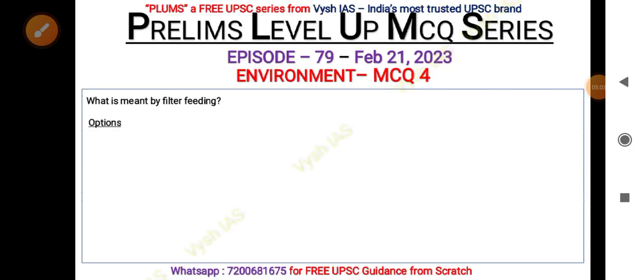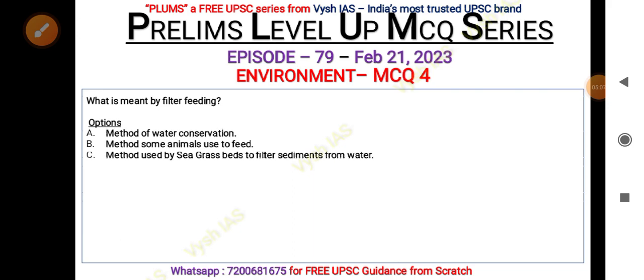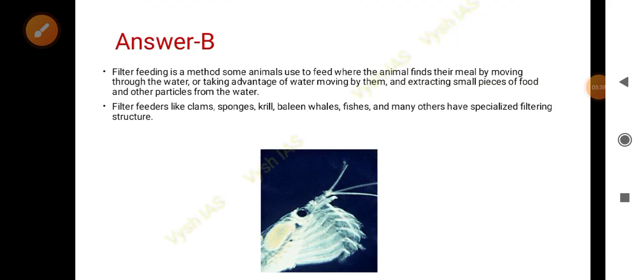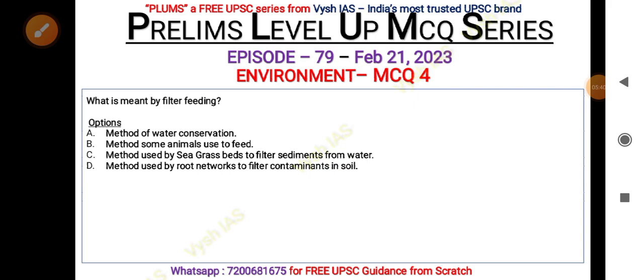The next question: what is meant by filter feeding? Options are: A — it is a method of water conservation; B — it is a method some animals use to feed; C — it is a method used by sea grass beds to filter sediments from water; D — it is a method by root networks to filter contaminants in soil. The answer is actually B.